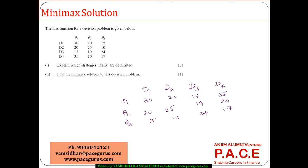First, explain which strategies, if any, are dominated. To check this, I need to see whether in any particular column every value is less than or equal to the other column's values. Looking at d1 versus d4 — lesser, equal, lesser — so d4 is completely dominated. D4 is dominated by d1, so I can retain only d1 from those two.